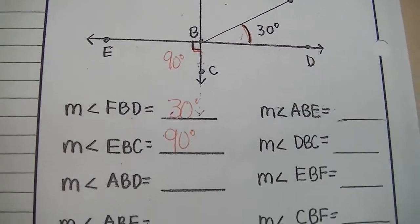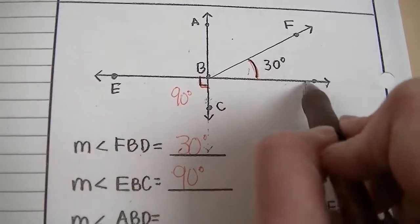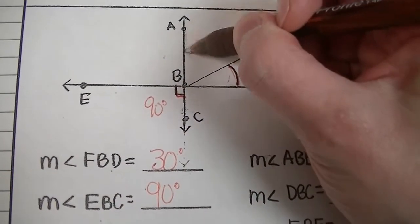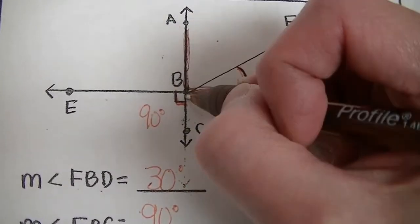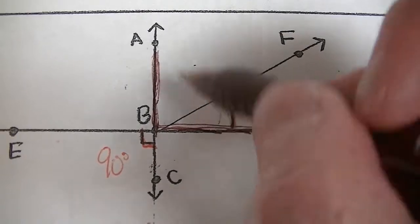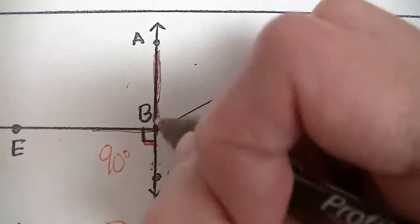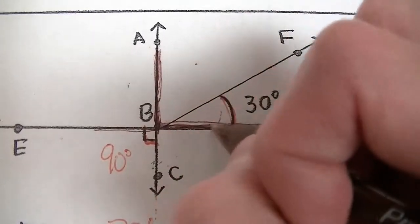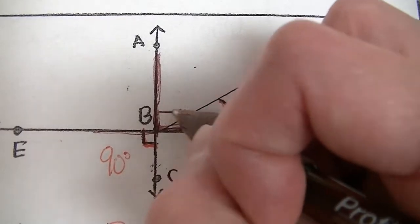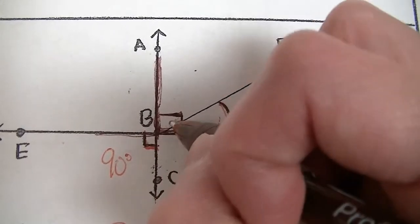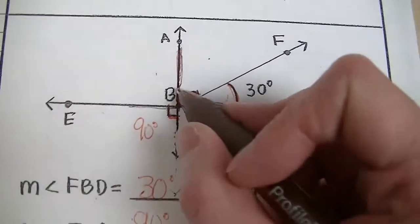Now find the measurement of angle ABD. Tracing angle ABD, this opening is vertical to the 90-degree opening of angle EBC. The lines trace straight across — so by the definition of vertical angles, since EBC is 90 degrees, this whole opening ABD also has to be 90 degrees.